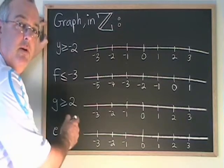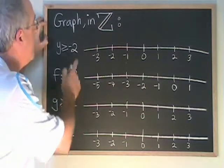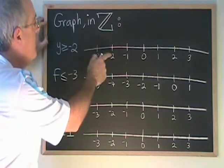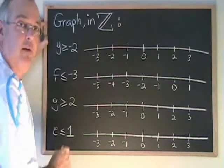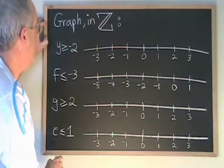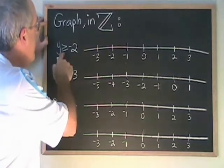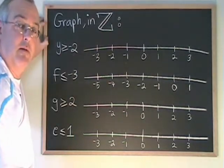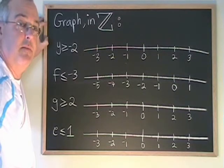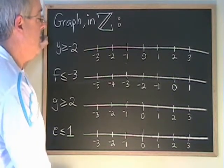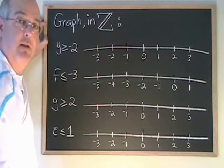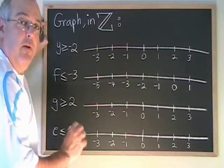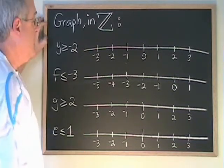Here are some more examples where we are graphing on the number line within the universe of integers. These examples have greater than or equal to and less than or equal to symbols. Things will work very much the same way with only slight differences.